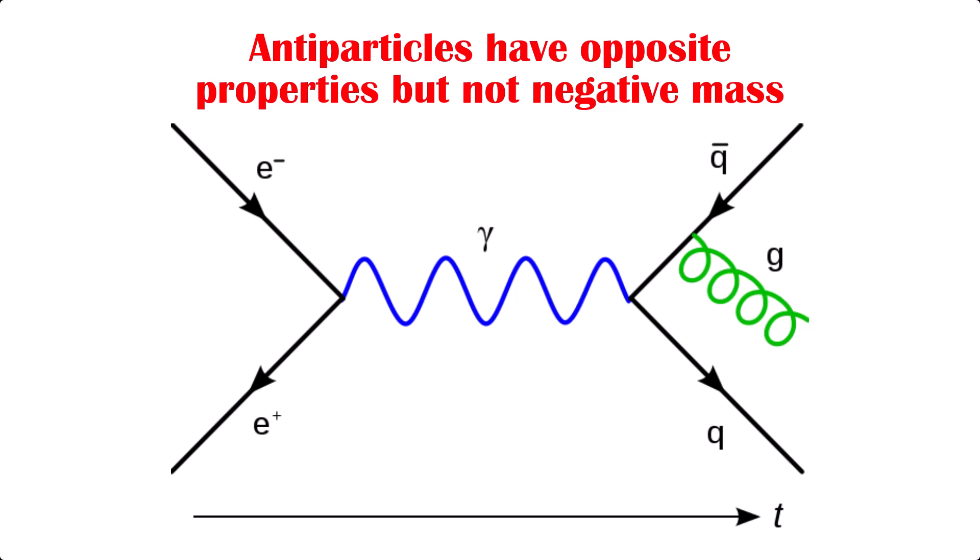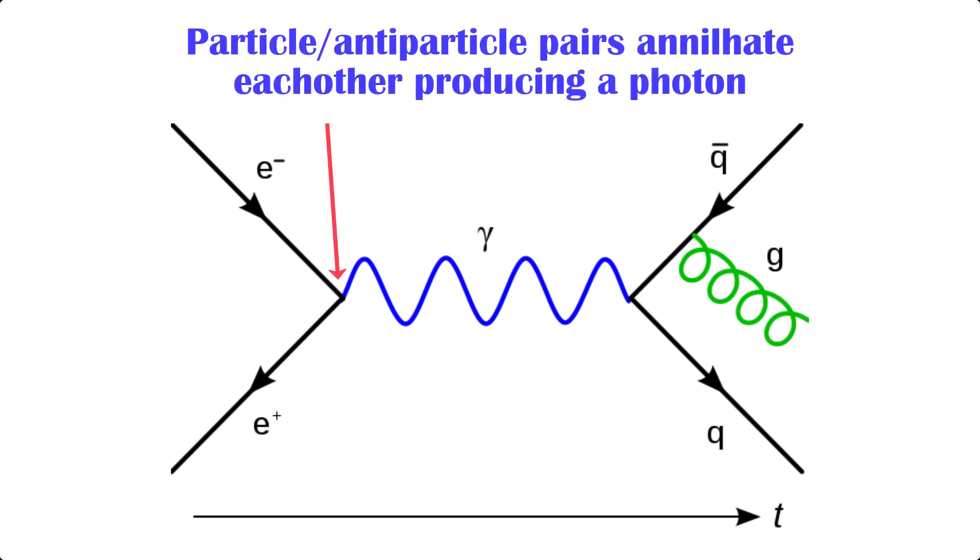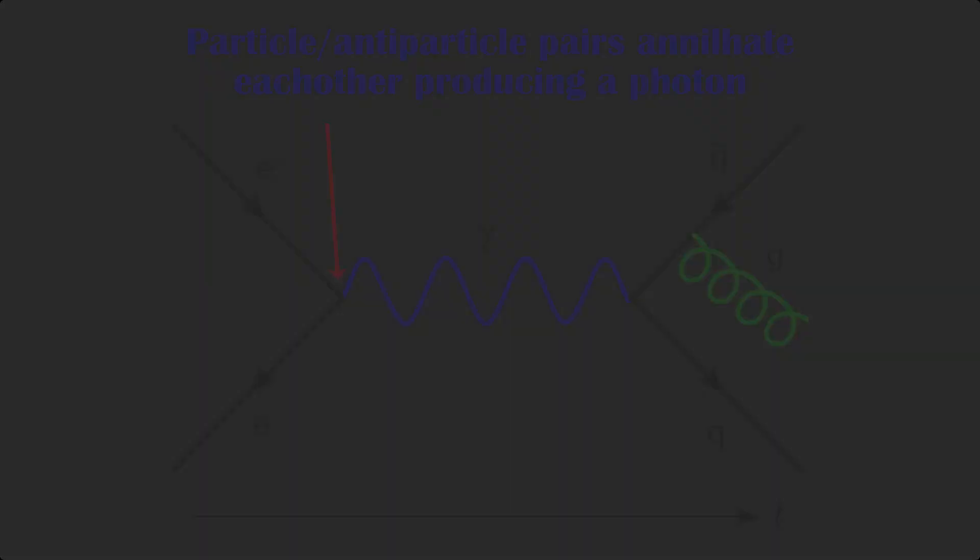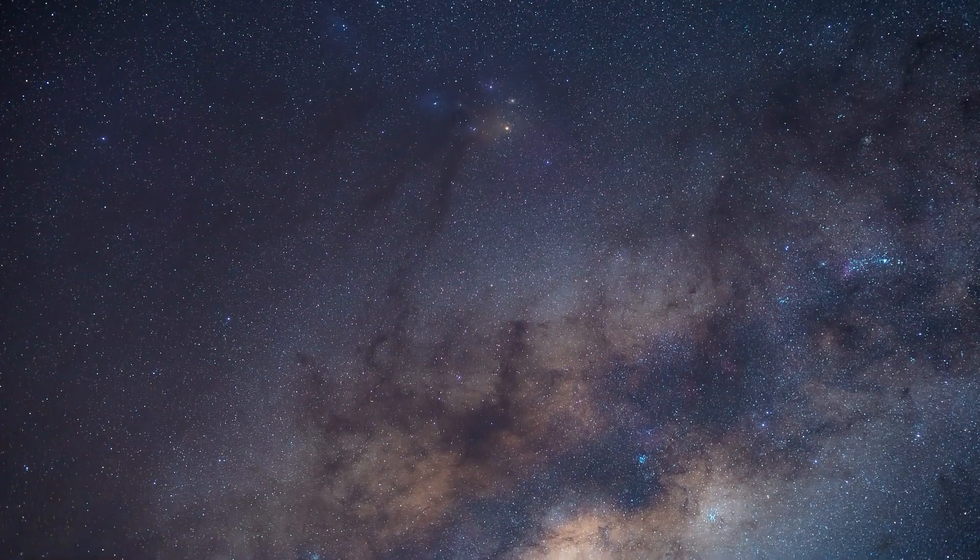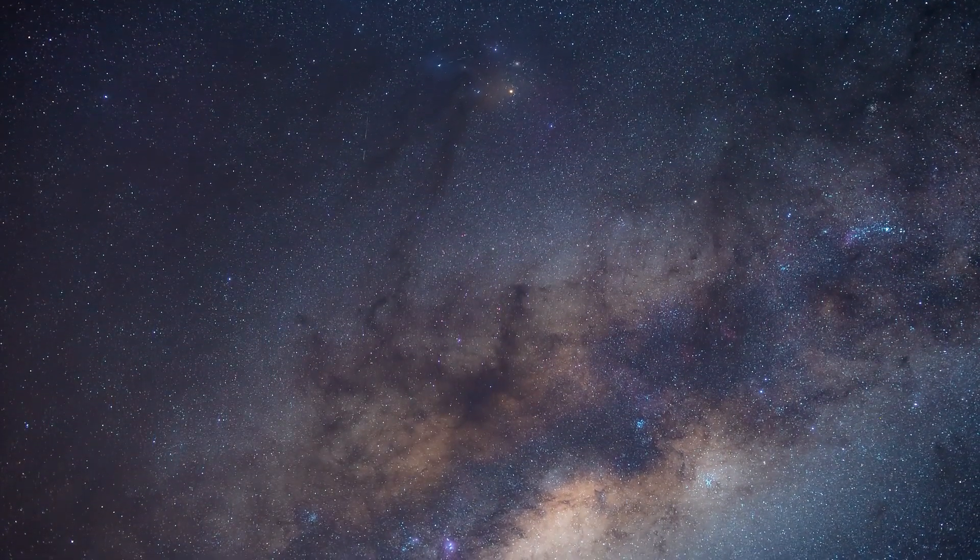The reverse of this decay equation is also true. A particle-antiparticle pair can annihilate to produce photons, and all the conservation laws are satisfied. So in order for the Big Bang to produce the matter we are made from, it must have also produced an equal amount of antimatter in order to conserve energy.